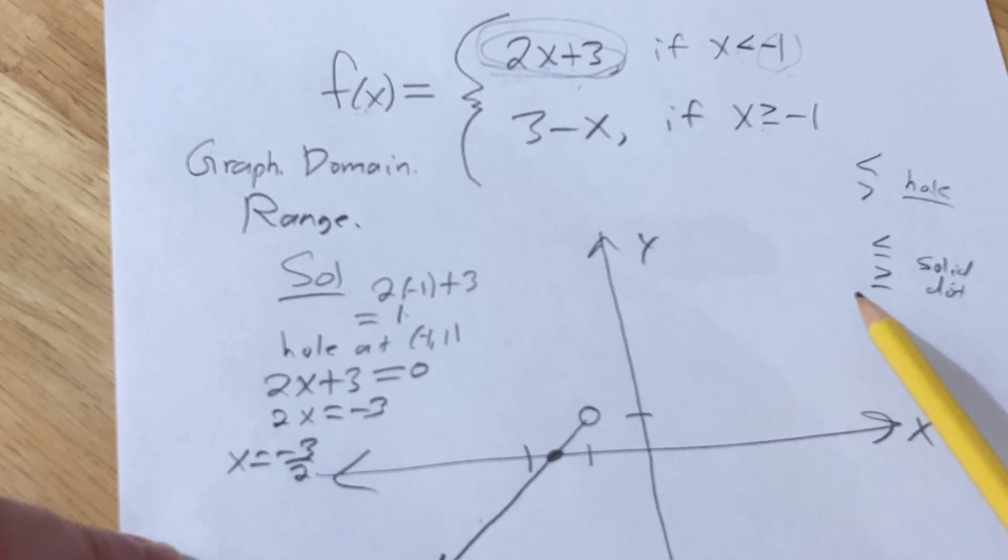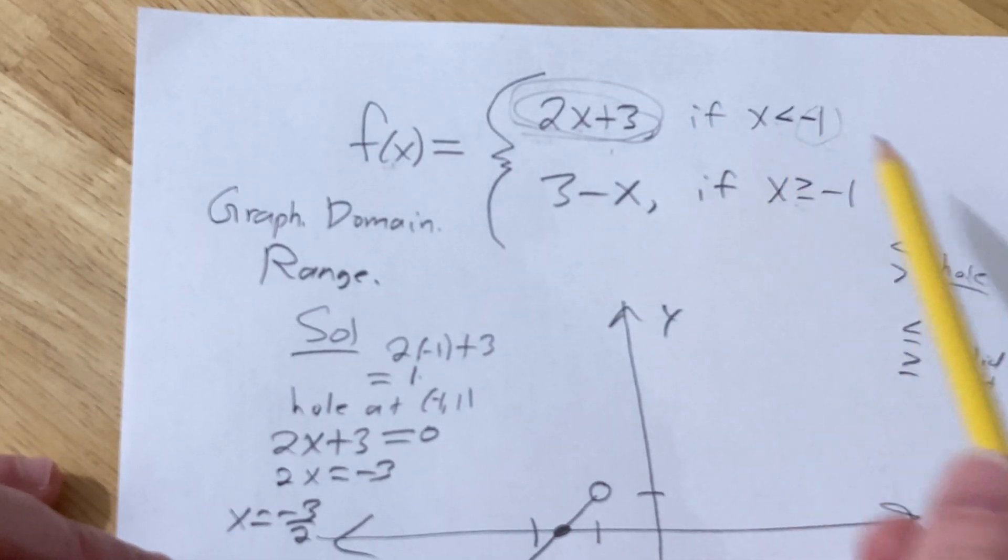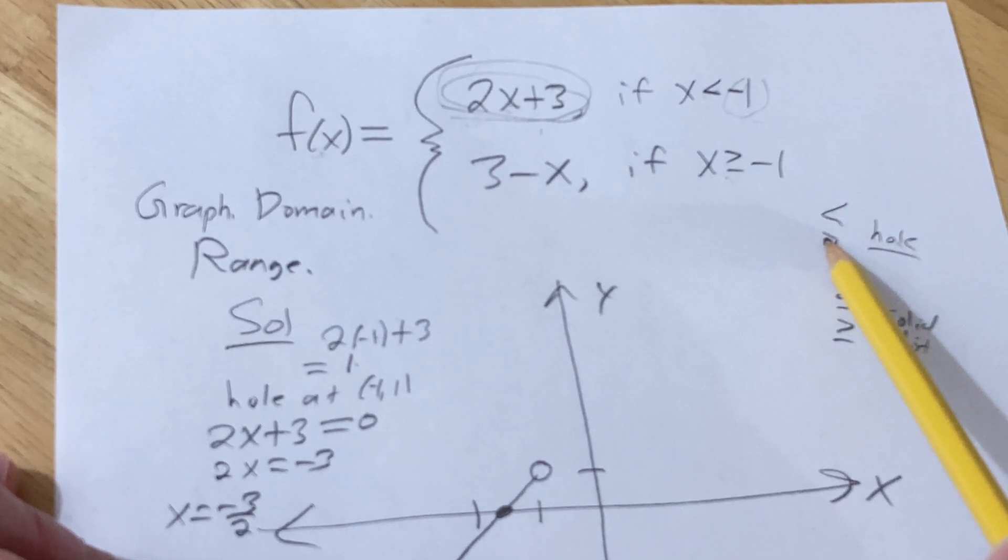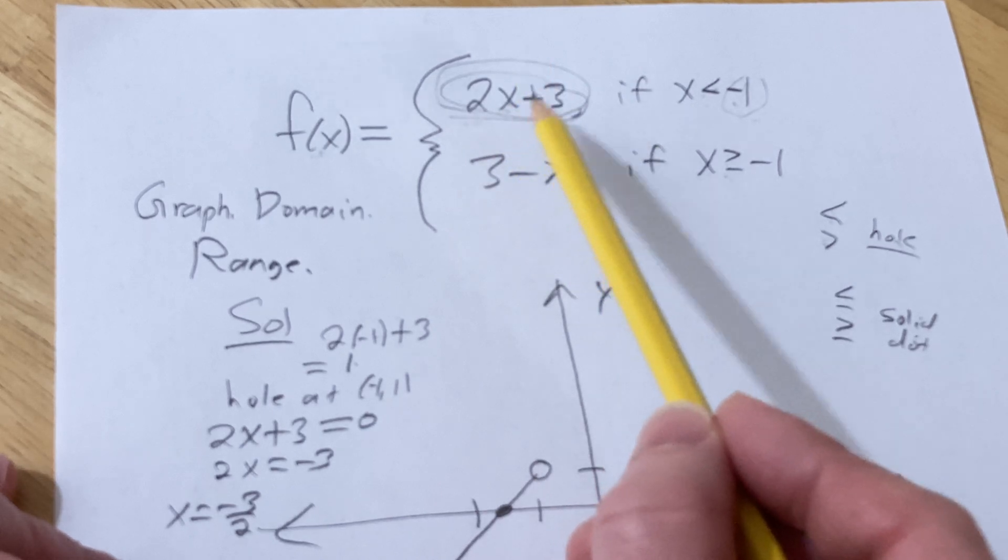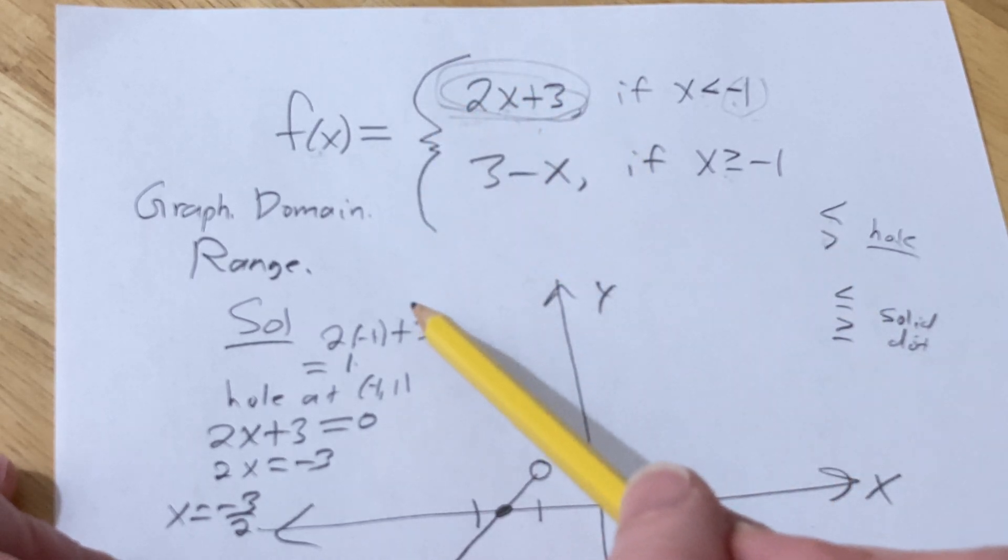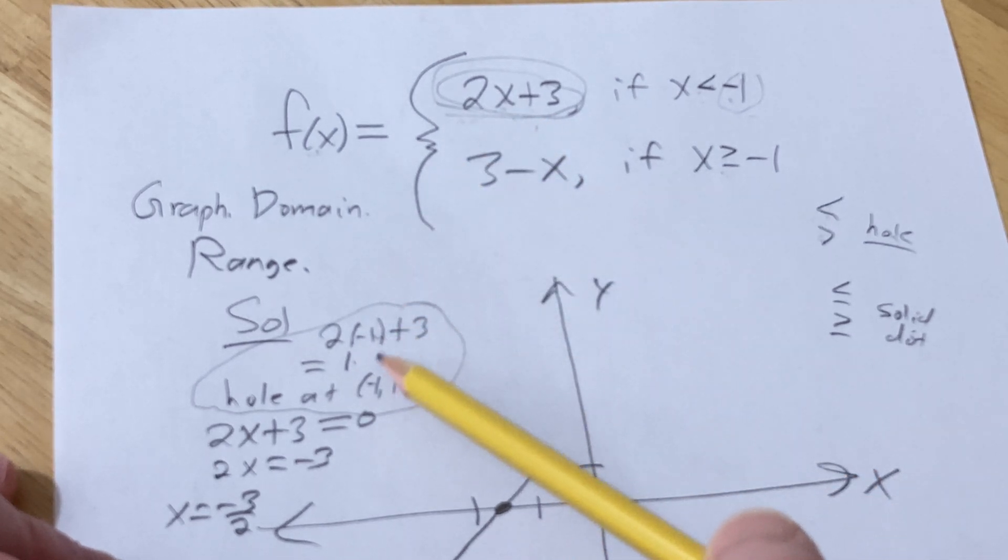Recap what we just did, because I did it pretty quickly. So first we wanted to find, first we're aware that there's a hole, you know, there's a hole whenever you have a strict inequality. So you take this number and you plug it in there. You're not supposed to do that, we're breaking the rules. So we did that work here, we plugged in the negative 1 for the x, we got 1, that's the y-value for the hole, and then the x-value is negative 1.